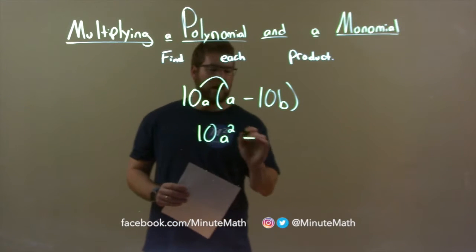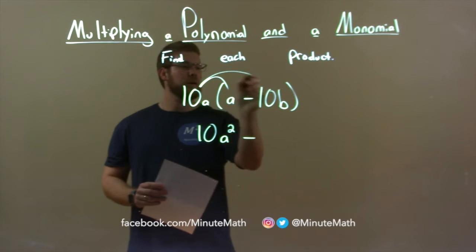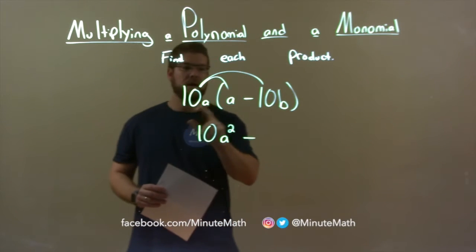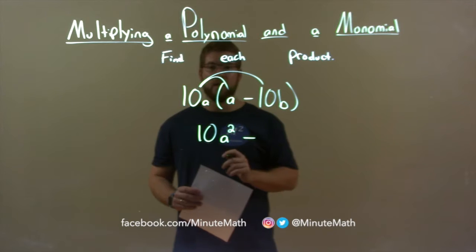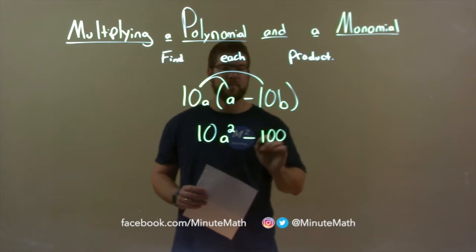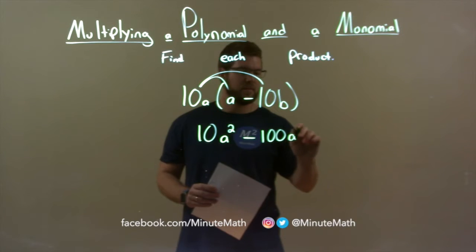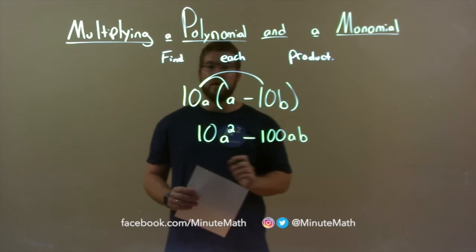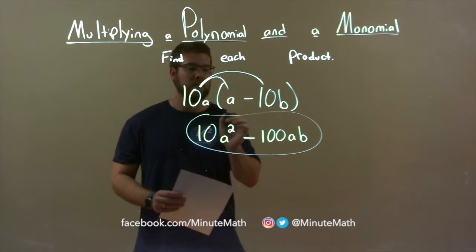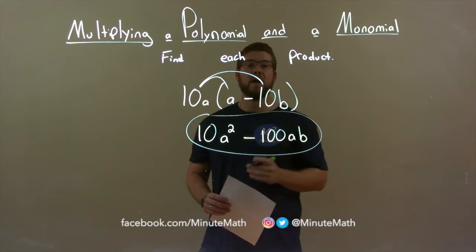Subtraction separates both terms, and now it's multiplied by 10a times 10b. 10 times 10 — the coefficients — is 100. a times b is just ab. And there we have it. Our final answer: 10a squared minus 100ab.